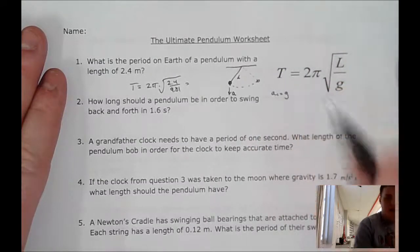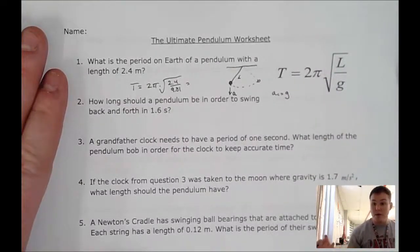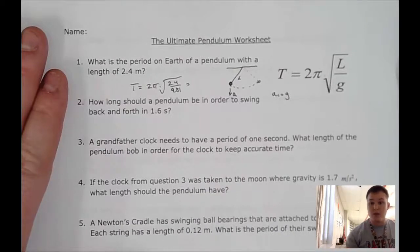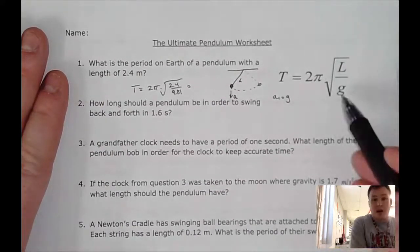Now this can change depending upon what planet you're on, if you're on an asteroid or something like that, or on the moon, for example. So anywhere where the acceleration, or the local acceleration of gravity is different, this g right here can definitely change.